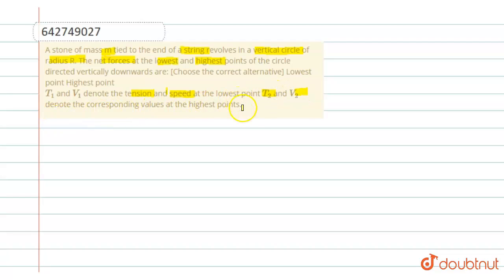T2 and V2 denote the corresponding values at the highest point. So in this question, we have to find the net force at the lowest point and the highest point. To understand it, first of all let's assume there is a string.